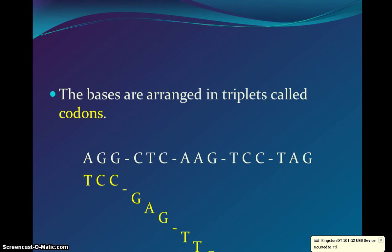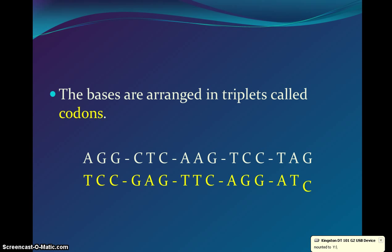Hopefully this is what you came up with on your note page. Adenine is always paired with thymine, and guanine is always paired with cytosine — so A and T are together and G and C are together. So our complementary codons are TCC, GAG, TTC, AGG, ATC.